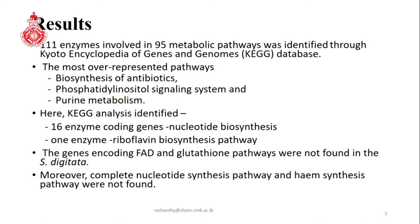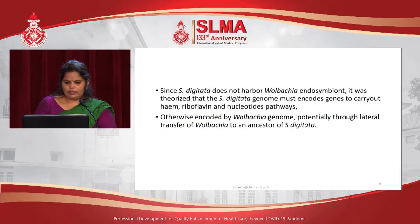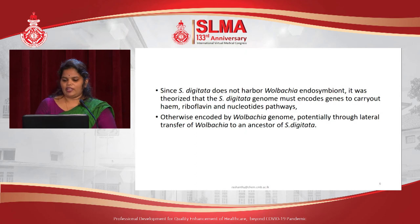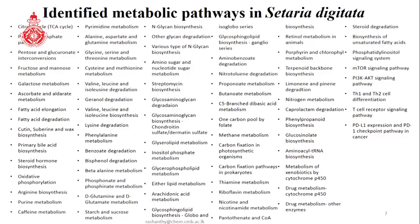Moreover, the complete nucleotide biosynthesis pathway and heme synthesis pathway were also not found in the genome. Since previous studies state that Cetaria Digitata does not have a Wolbachia endosymbiont, it is theorized that the Cetaria Digitata genome must encode the heme, riboflavin, and nucleotide pathways — otherwise these can be encoded by the Wolbachia genome, potentially through lateral gene transfer.